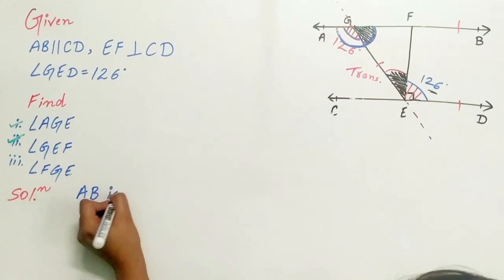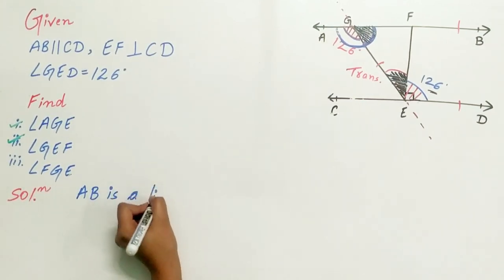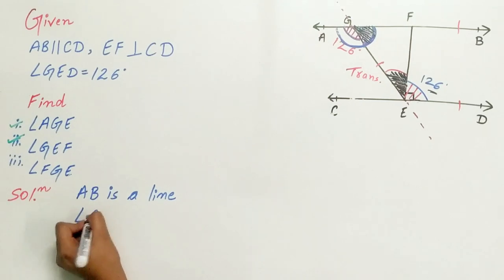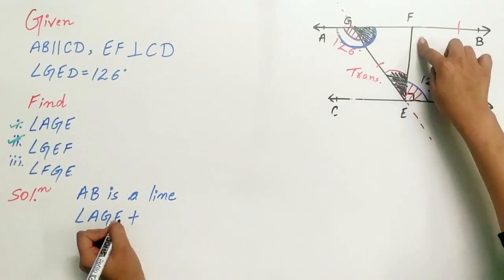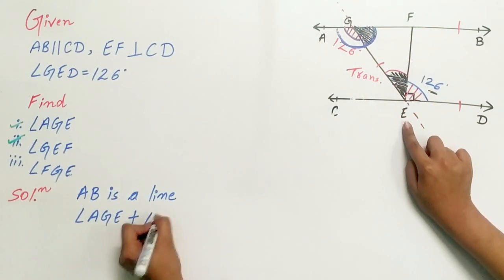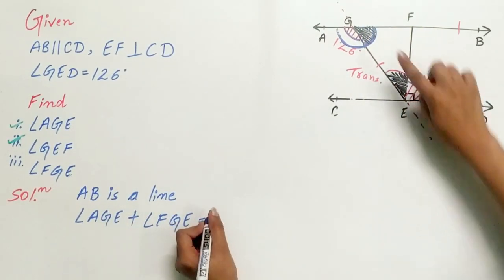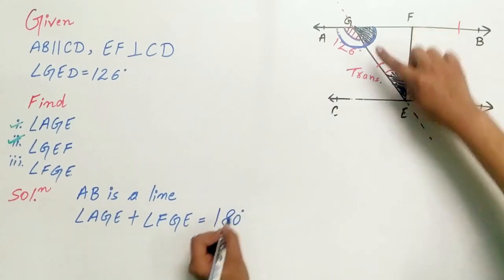AB is a line. Angle AGE plus angle FGE is equal to 180 degrees. Why?